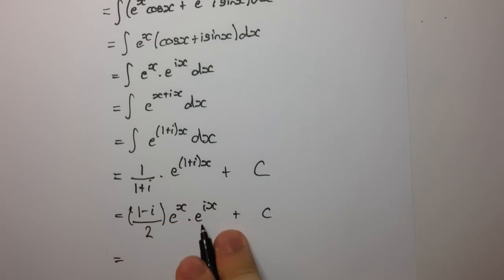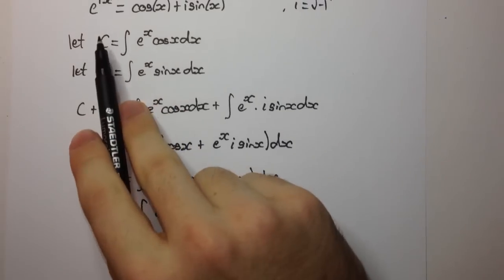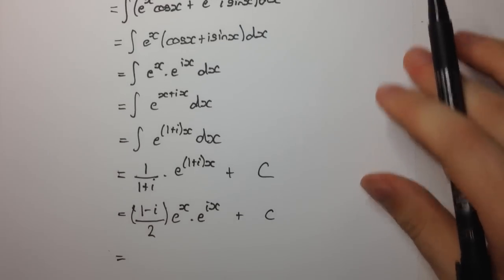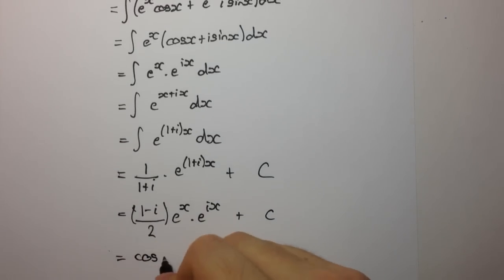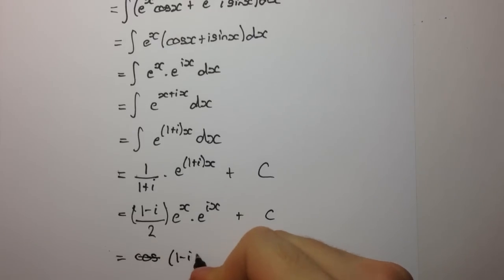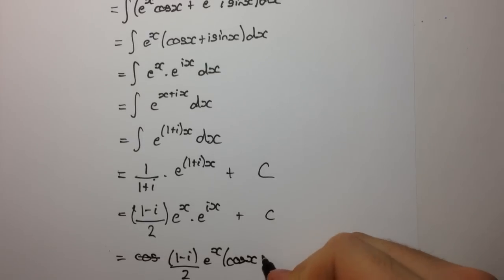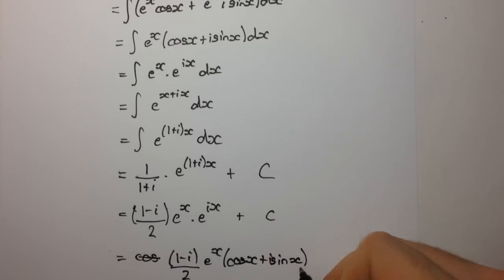What is e to the i·x? Well, by Euler's theorem it's cos(x) plus i·sin(x). So we have (1 minus i) over 2, times e to the x, times (cos(x) plus i·sin(x)), plus c.